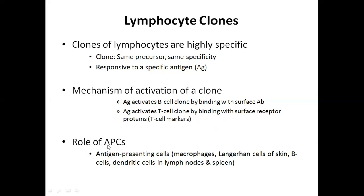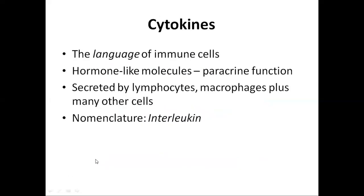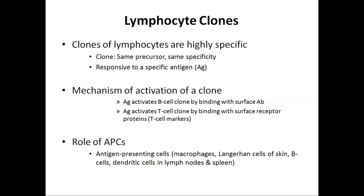What is the role of antigen presenting cells? The antigen presenting cells are mainly macrophages, Langerhans cells of the skin, T lymphocytes, and the dendritic cells present in the skin and lymph nodes. These antigen presenting cells have the major histocompatibility complex present on their surface, and this complex presents antigen to the B and T lymphocytes.